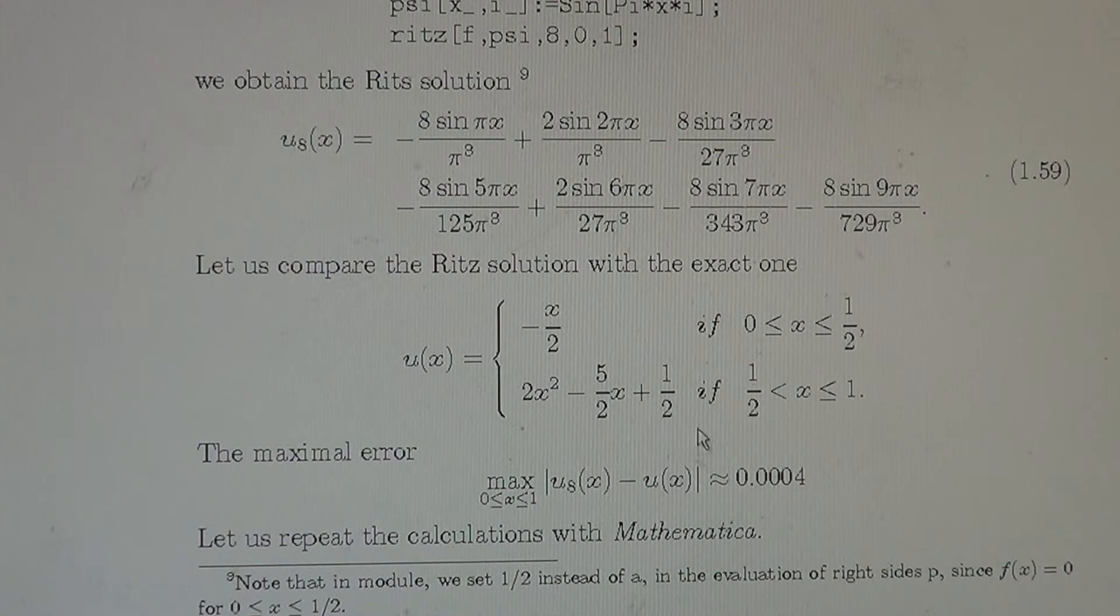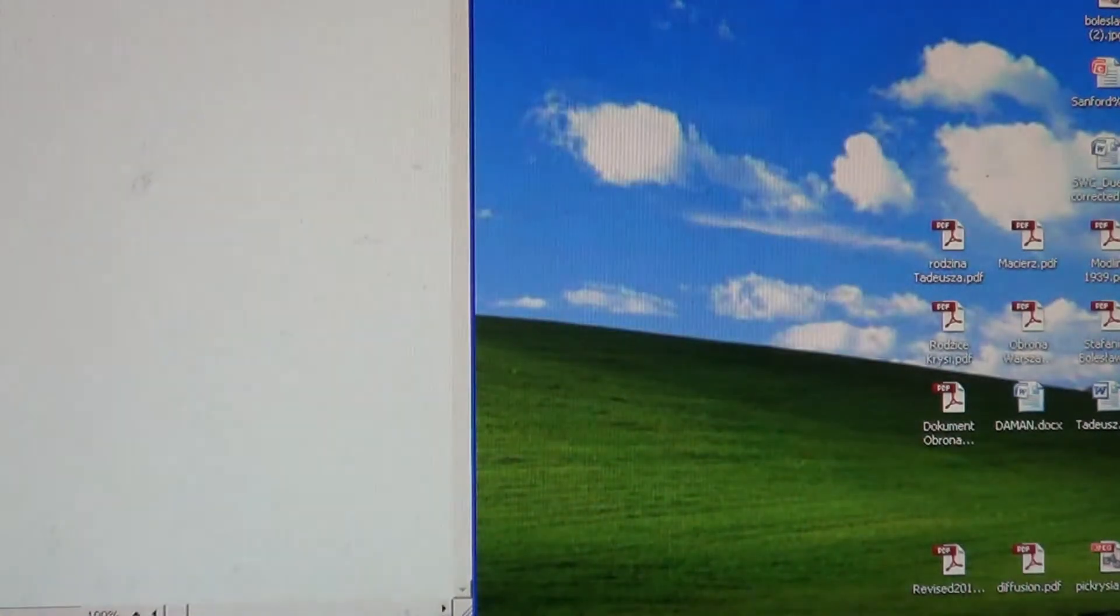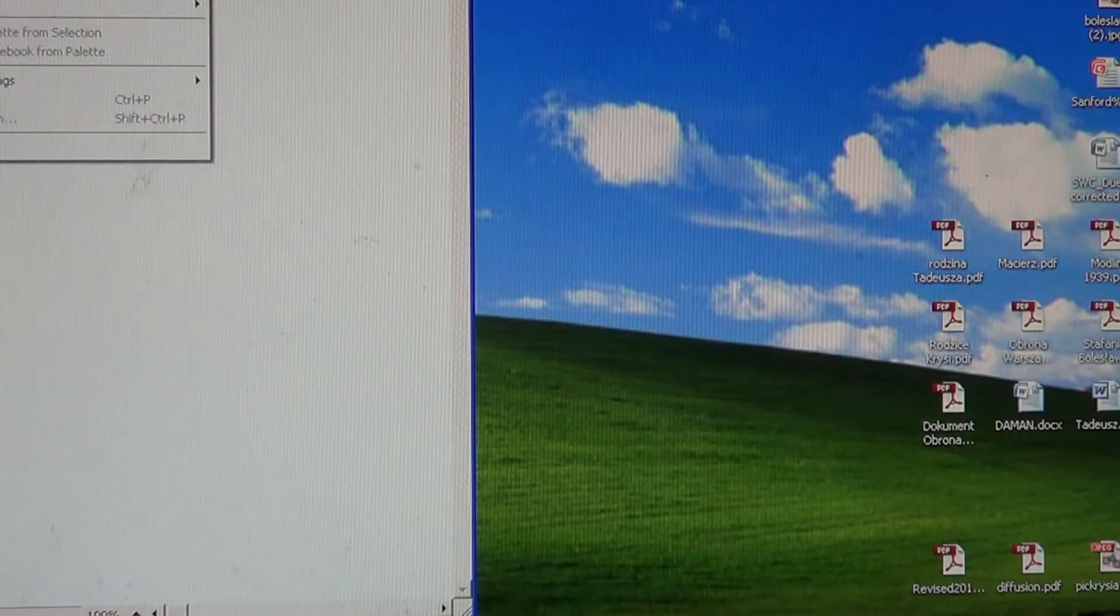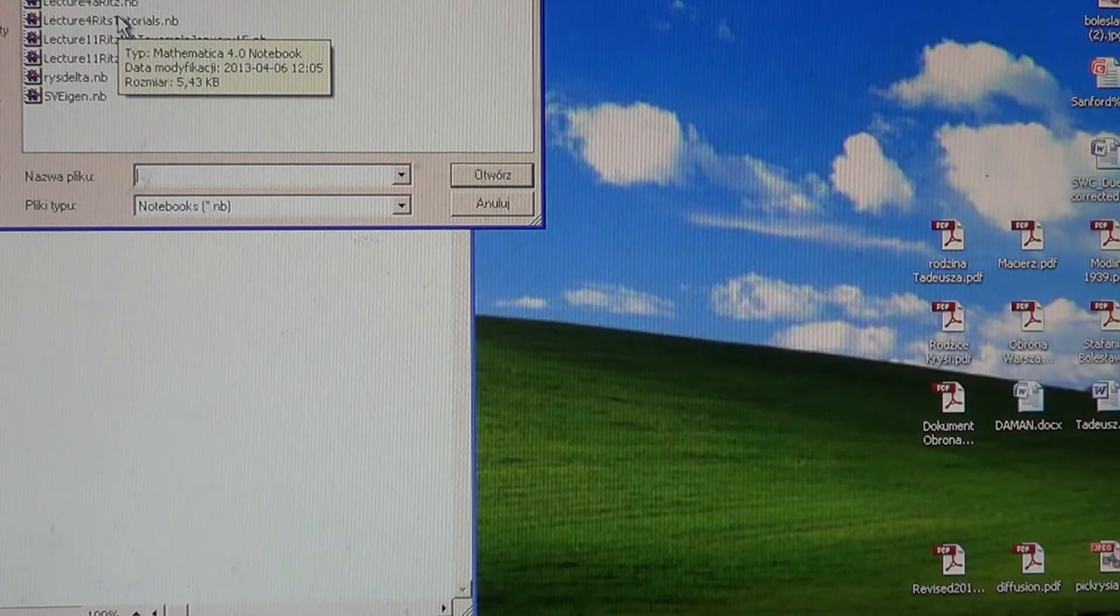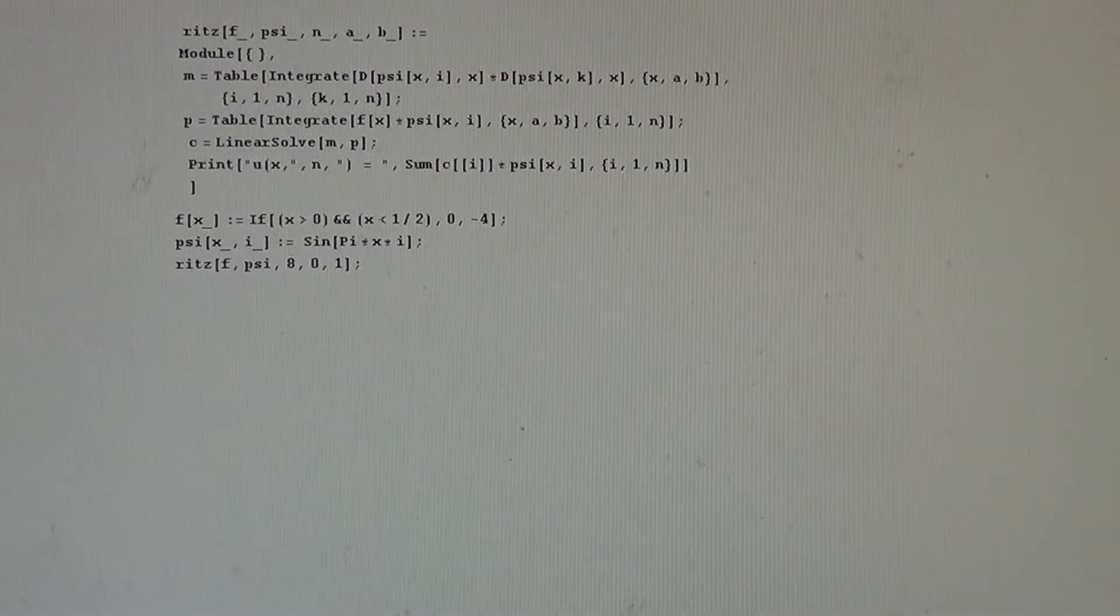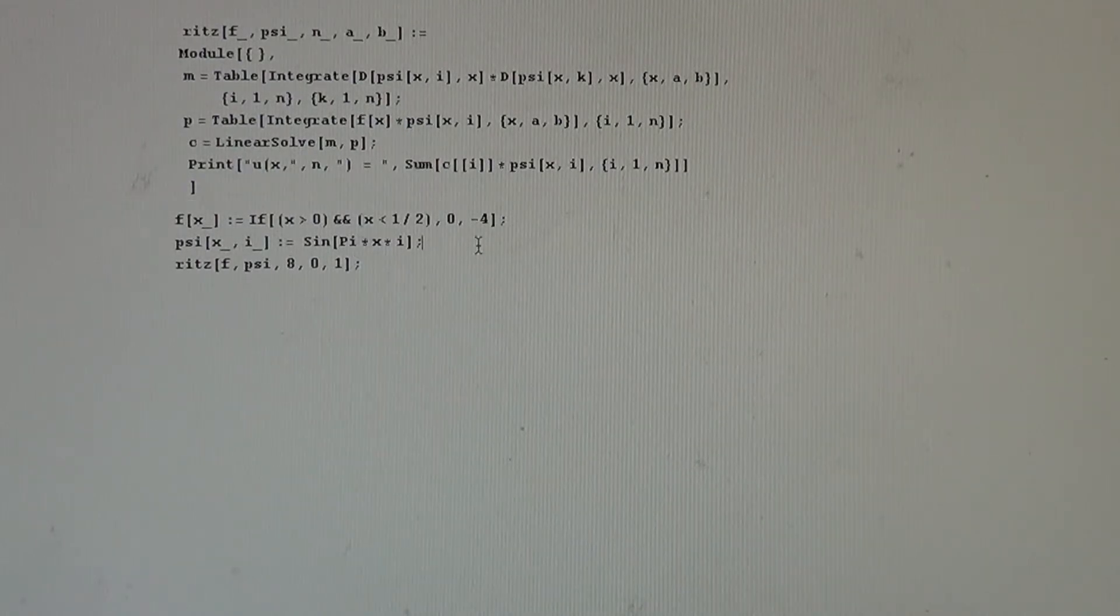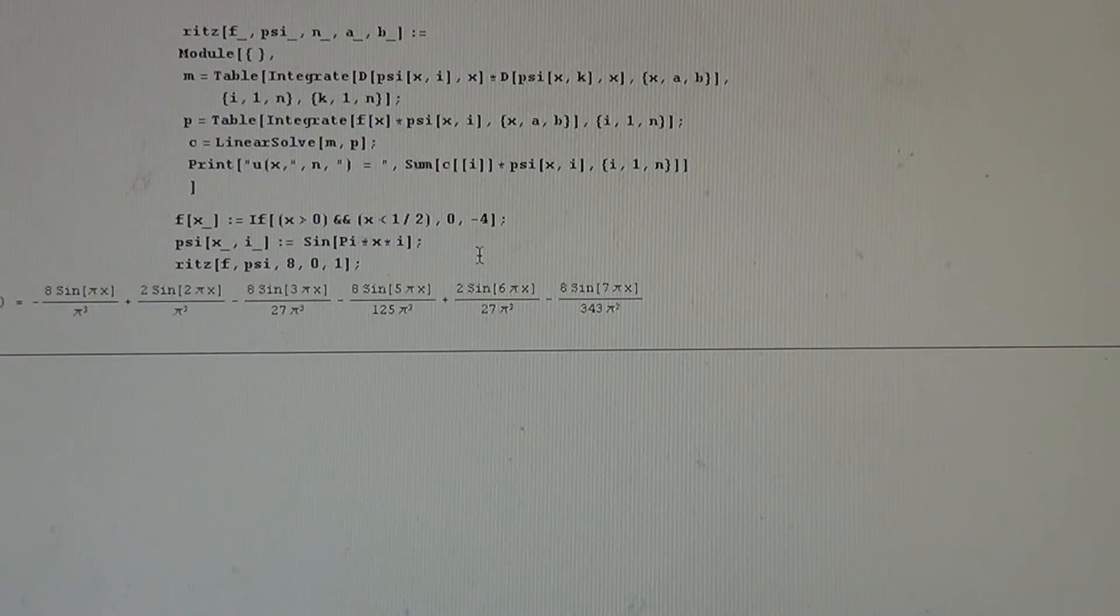So let us repeat these calculations using a Mathematica system. We go to Mathematica, we are in Mathematica, we open the module, this is the module, we have it. We activate the module, pressing Shift, Enter, the module is in the memory. We enter parameters, the function F in the example, and the Ritz coordinates, and we call the module to get the, we have it.